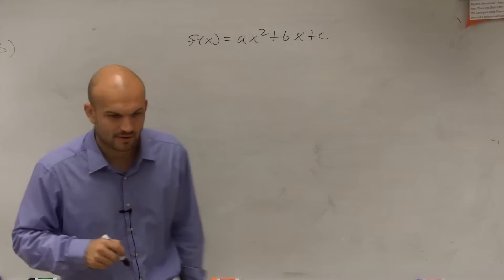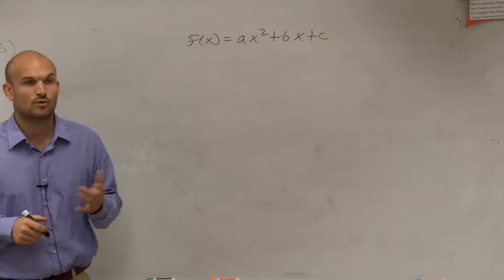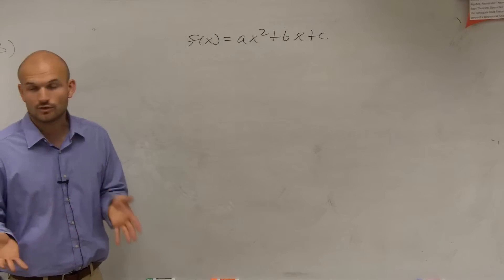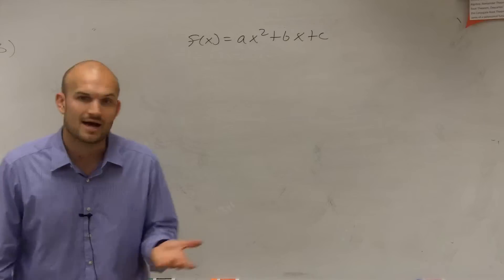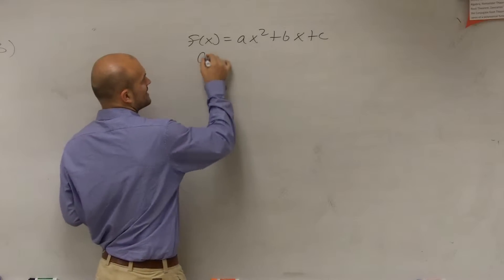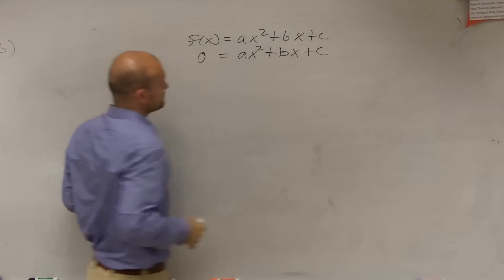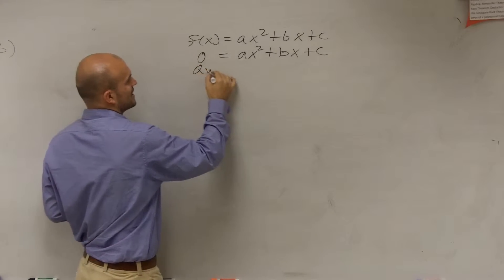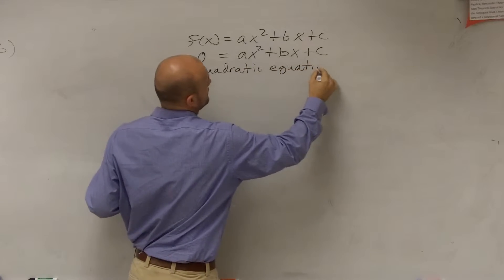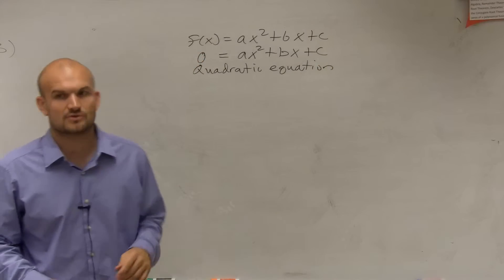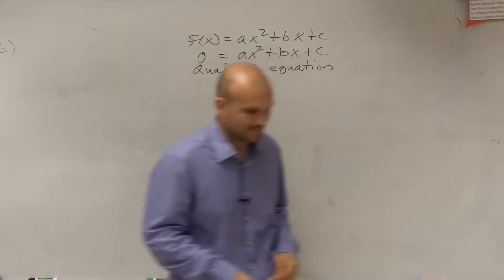Now the next thing we want to do is look at what we call the quadratic equation. A quadratic equation is very similar to a quadratic function. However, we're going to set a quadratic equation equal to a value — and the value we're going to set it equal to is 0. This is what we call the standard form of a quadratic equation.